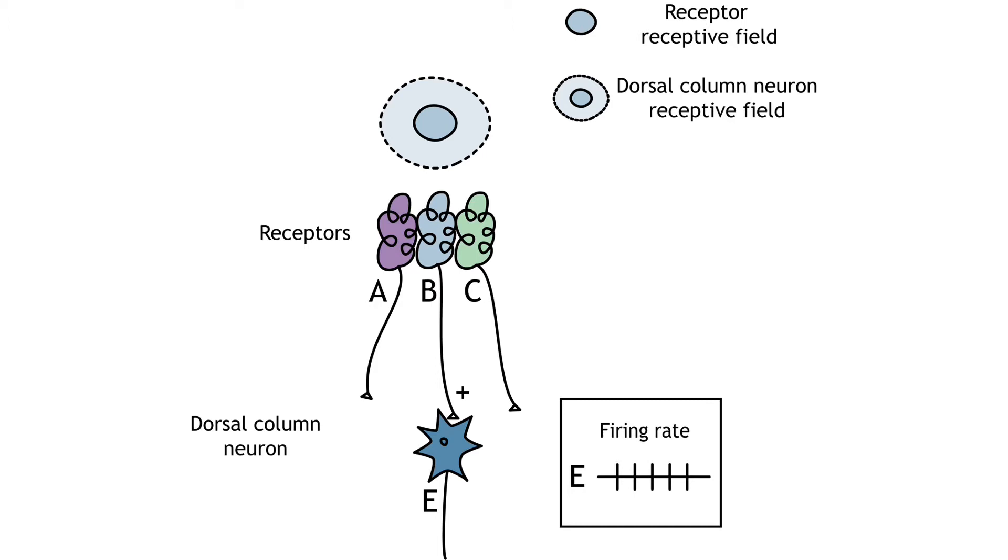When no stimulus is present, the dorsal column neuron fires at a baseline rate. When a stimulus touches the center of the receptive field of cell E, the firing rate increases.